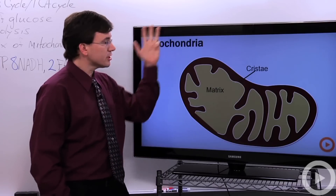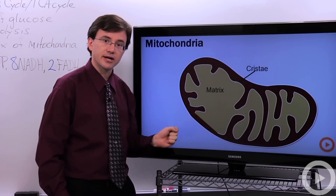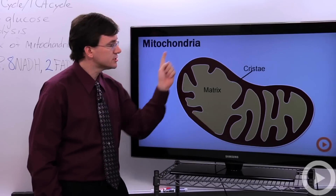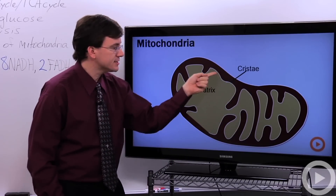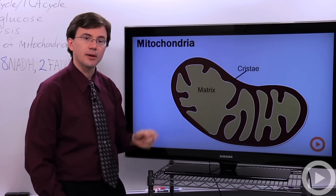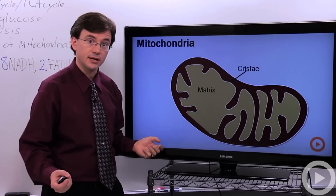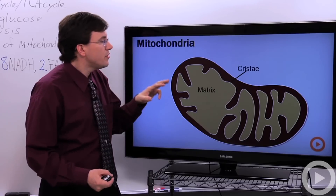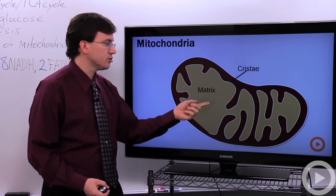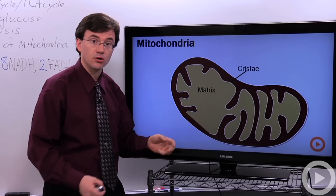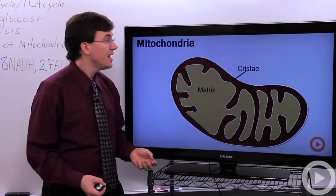If we take a look at the structure of the mitochondria, you can see it has an outer membrane, and then it has this folded inner membrane called the cristae. Within the cristae's folds, you'll have an inner space or compartment called the matrix.